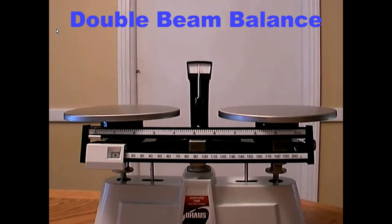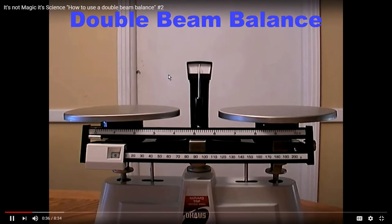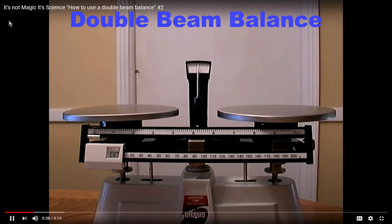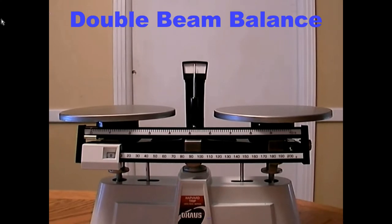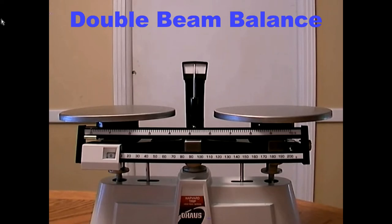A double beam balance. We're just going to call it a double beam balance. Notice that I did not call this a balance scale. I did that because it's not a balance scale. A scale determines your weight, and your weight is a measurement of how gravity affects your mass. On this balance, we are just going to measure the mass of two objects. That's why we're not calling it a balance scale.